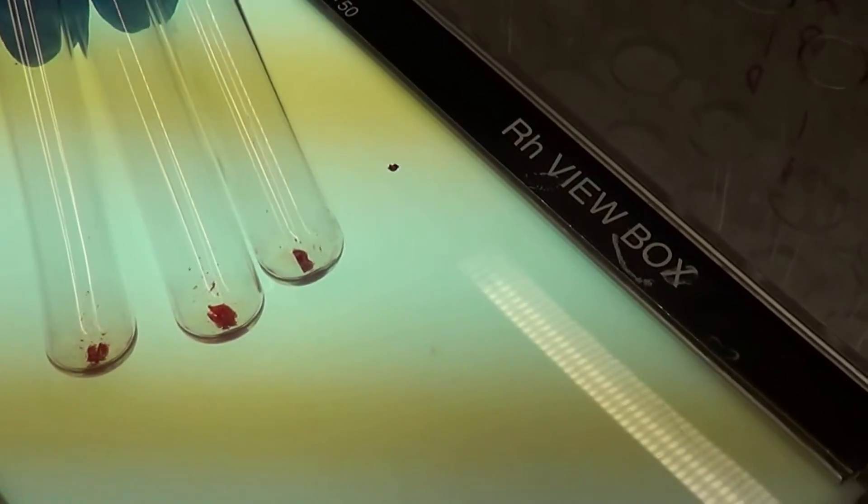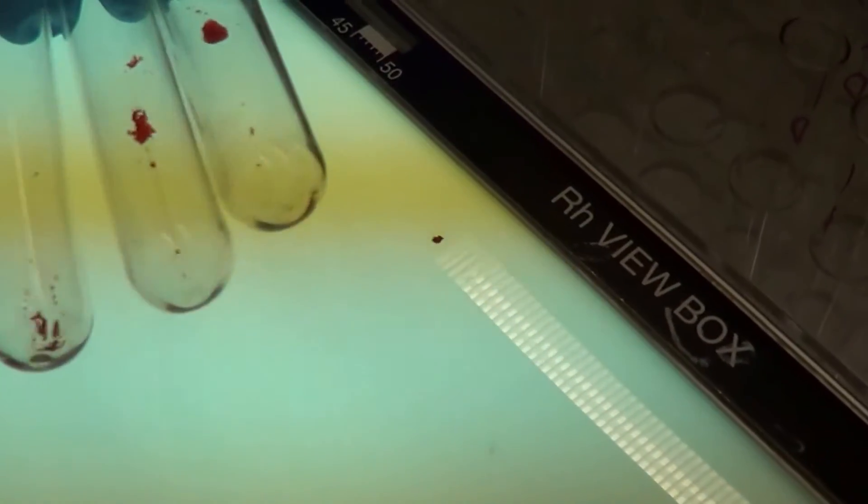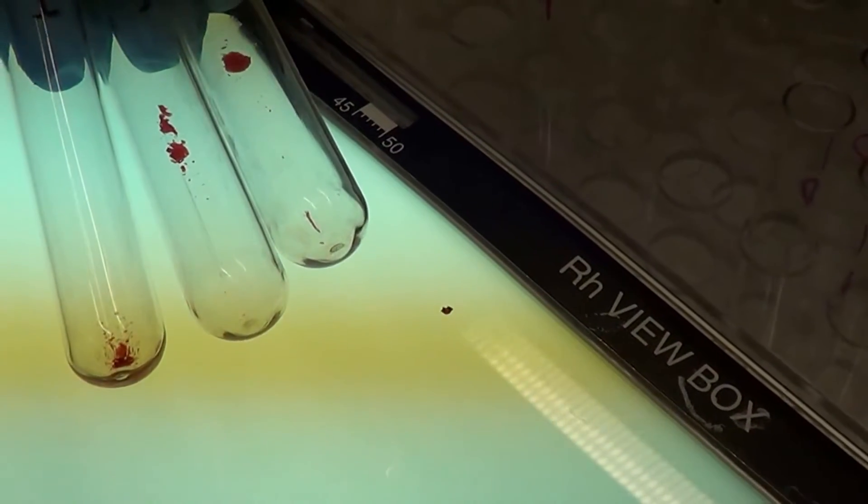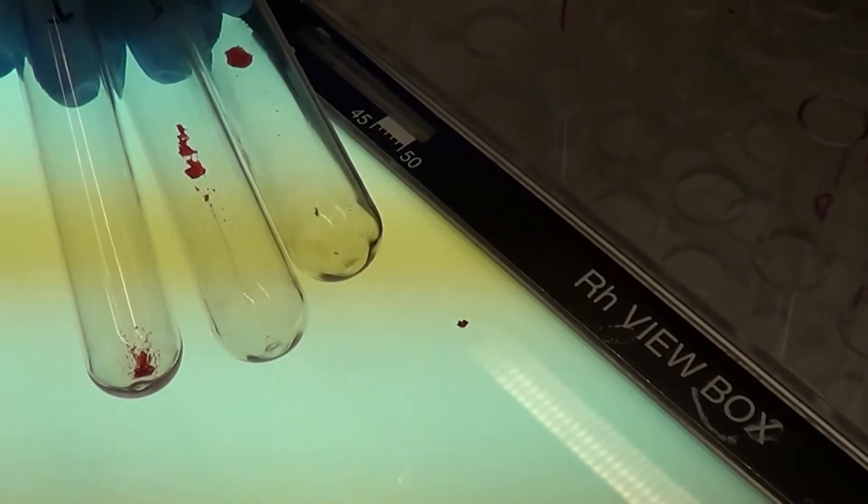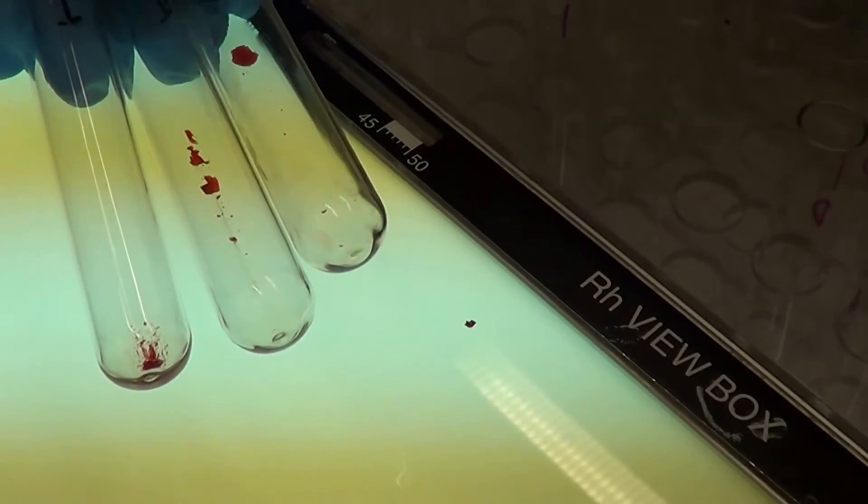This is a positive reaction. You can see the agglutination in the test tubes. That means this patient has antibodies to red cell antigens and we would have to investigate to determine what it is.